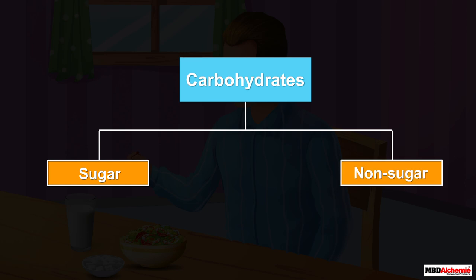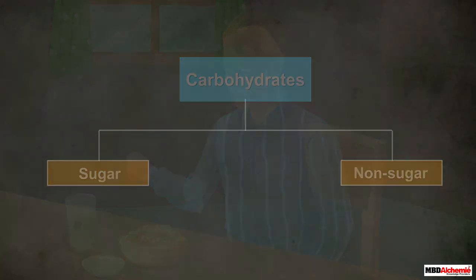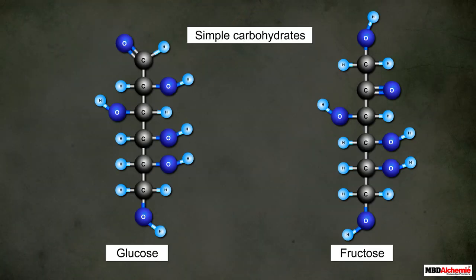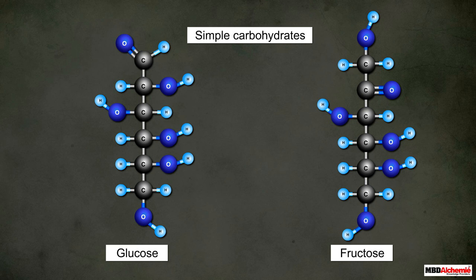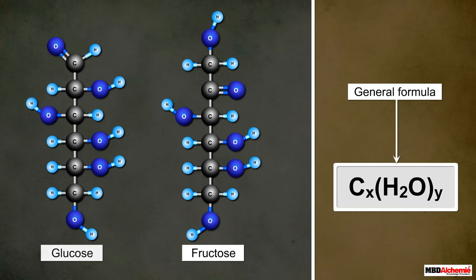Now let us learn about the structures of carbohydrates. For this, let us consider the structures of two simple carbohydrates: glucose and fructose. As you can see, these carbohydrates consist of three main elements: carbon, hydrogen, and oxygen. Due to the presence of these elements, earlier carbohydrates were given a general formula of CₓH₂Oᵧ.